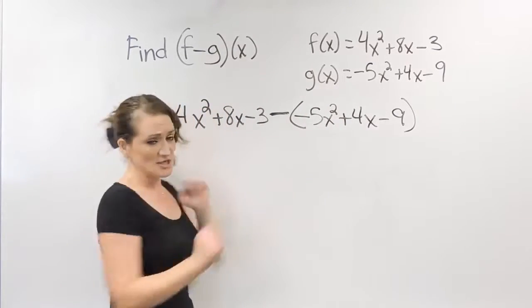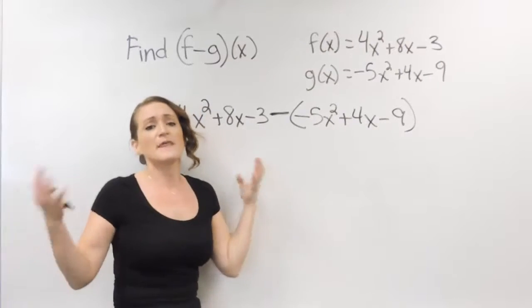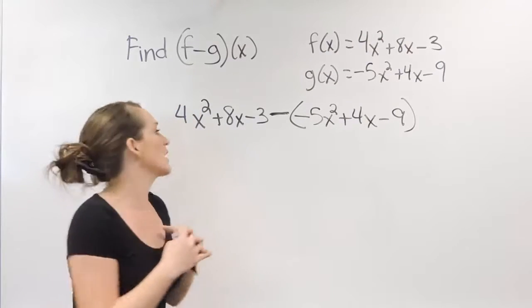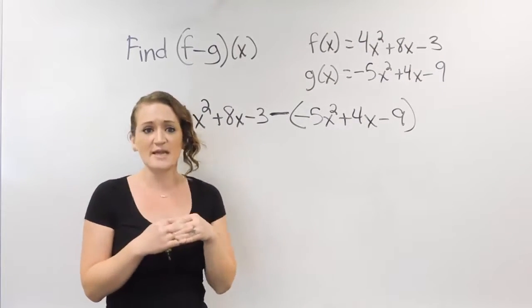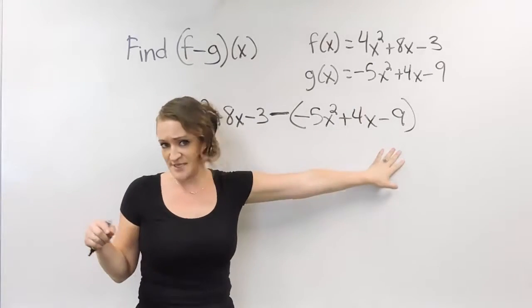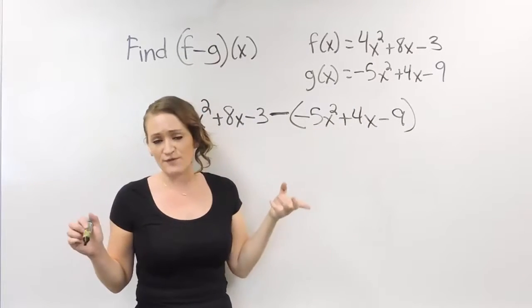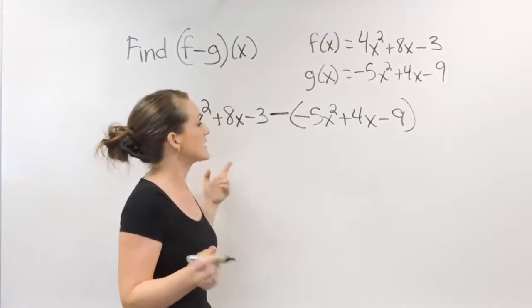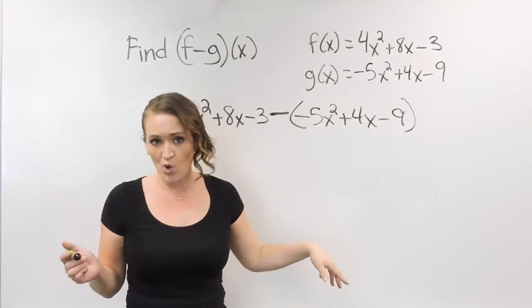When it comes to subtracting two polynomials together, the main important thing and where most students make their mistake is forgetting to subtract this entire thing away. This minus sign in front of these parentheses is asking you to subtract that whole thing.